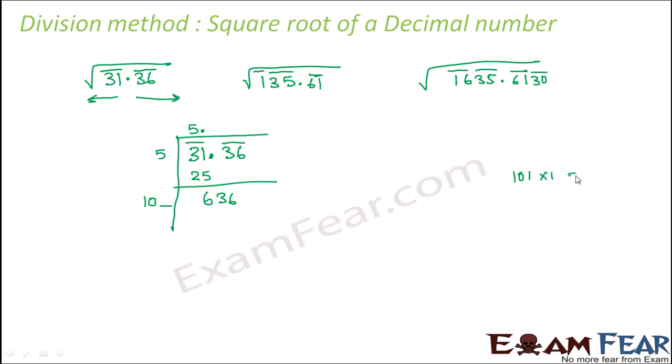If you put 1, then 101 into 1 is 101, which is less than 636. If you put 2, then it is 204, which is also less than 636. If you put 3, then it is 309, which is also less than 636.